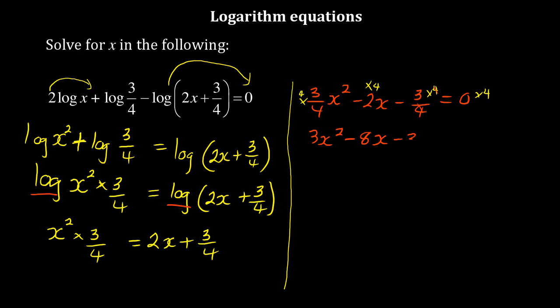minus 8x minus 3 equals 0. You can use the quadratic equation where a equals 3, b equals negative 8, and c equals negative 3. The quadratic equation is x equals minus b plus or minus the square root of b squared minus 4ac all over 2a.